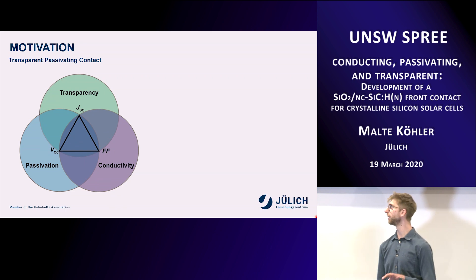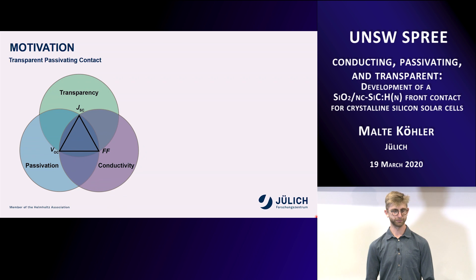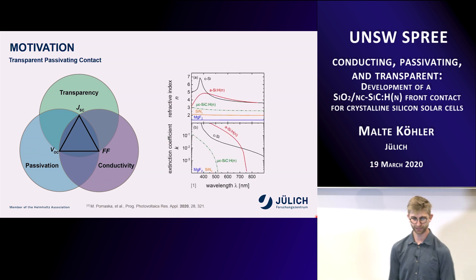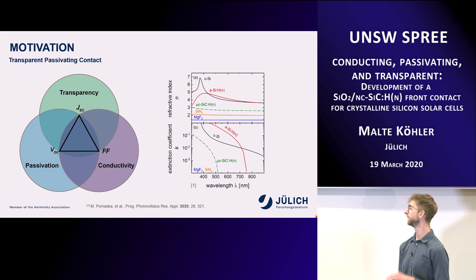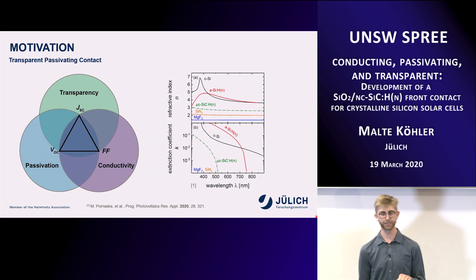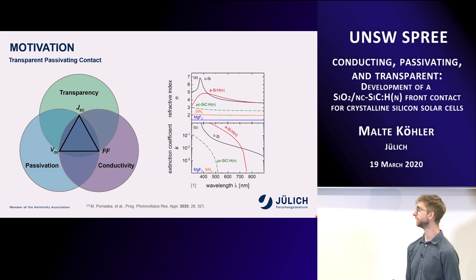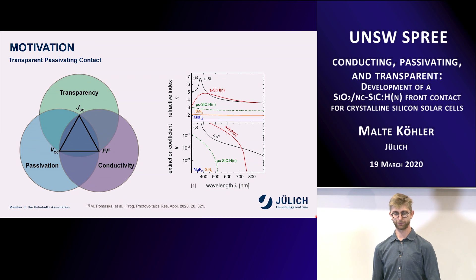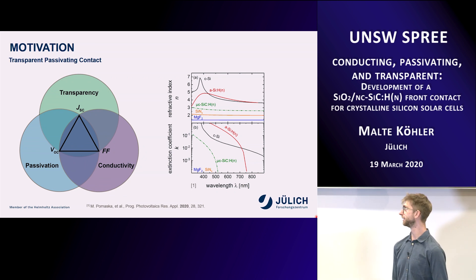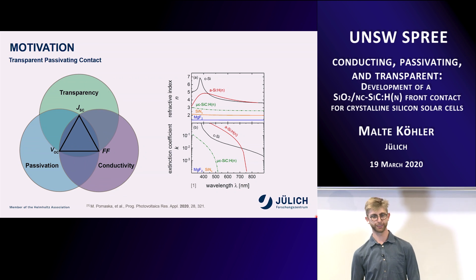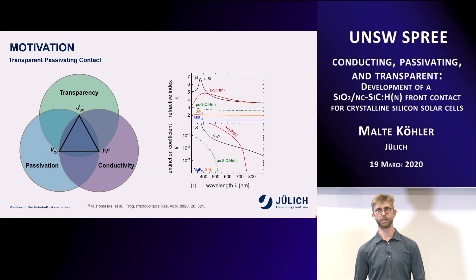My PhD worked around this triangle: transparency, passivation, and conductivity. Transparency for silicon carbide comes naturally because of the high band gap. The extinction coefficient for silicon carbide is orders of magnitude lower than that of crystalline silicon and amorphous silicon. Additionally, the refractive index is a really good match for silicon, so reflection is also lower. In our recent study, we investigated microcrystalline silicon carbide as an anti-reflection coating for IBC solar cells. Even in a stack with silicon nitride and magnesium fluoride, we found the ability to achieve really high JSCs in IBC solar cells.